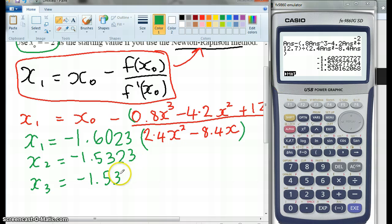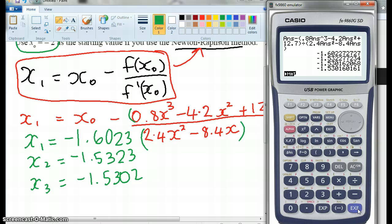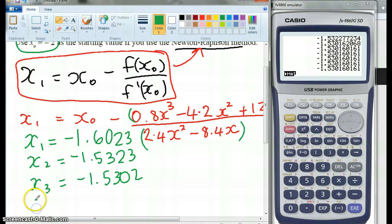Yeah. And if I hit execute, you can see that that now has converged, that the x₄ is the same as x₃ to 4 decimal places. So we've actually got it right. Okay.